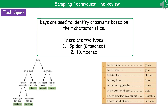Once we've actually collected organisms, we need to identify them. Two ways we can do this, both are versions of what's called a key. Keys are used to identify organisms based on their characteristics. The two types we've got: in the bottom left is a spider or branched key, and in the bottom right we've got the numbered key. You just start at the top on the numbered key or the branched key and work your way down, answering the questions as you go and following instructions given.